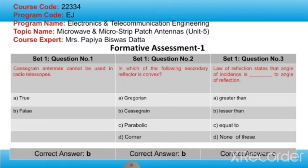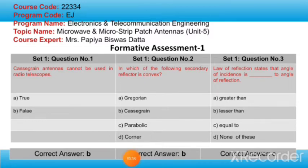Now let's take a minute and try to answer these questions. Cassegrain antennas cannot be used in radio telescopes — true or false? In which of the following configurations is the secondary reflector convex? And what does the law of reflection state about the angle of incidence and angle of reflection? The answers are: Cassegrain antennas cannot be used in radio telescopes — that is false. The secondary reflector is convex in the Cassegrain configuration. And the law of reflection states that the angle of incidence is equal to the angle of reflection.